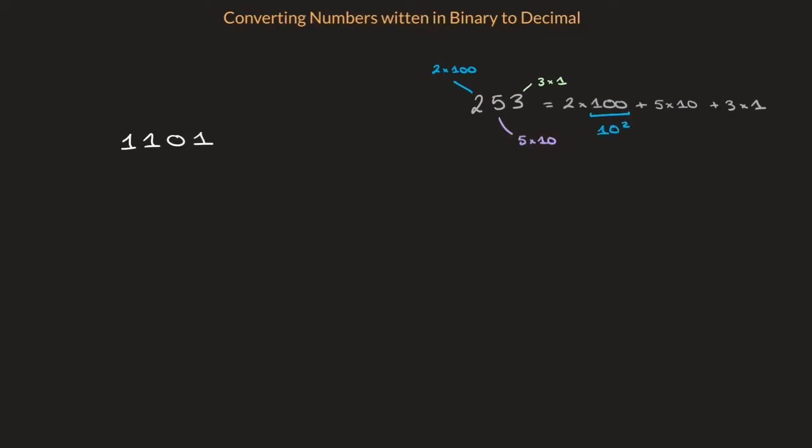And the 5 times 10 is in fact 5 times 10 raised to the power of 1. Finally, this 3 times 1 can be thought of as 3 times 10 raised to the power of 0. Remember, any non-zero number raised to the power of 0 is just equal to 1.